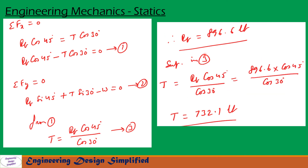Now let us substitute RB equal to 896.6 lb into equation 3. We get T equals RB cos 45 divided by cos 30, which equals 896.6 times cos 45 divided by cos 30. After simplification, T equals 732.1 lb.